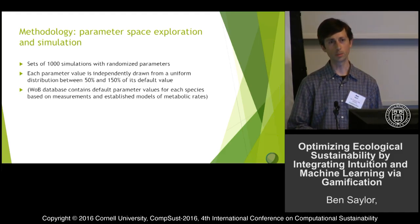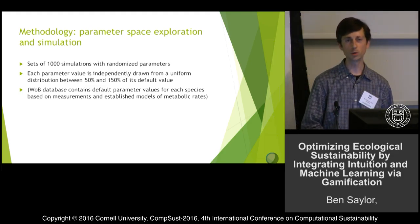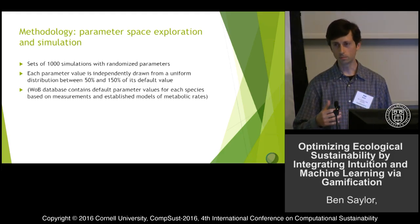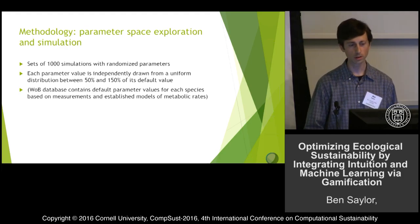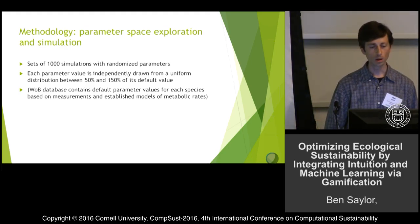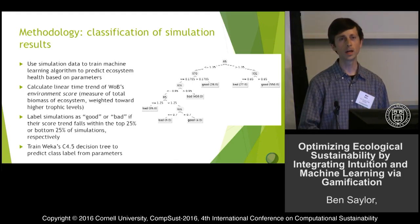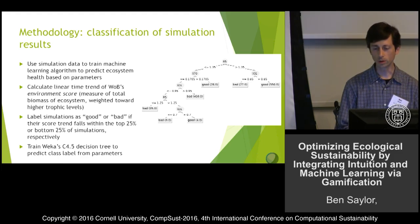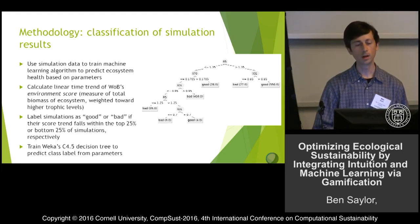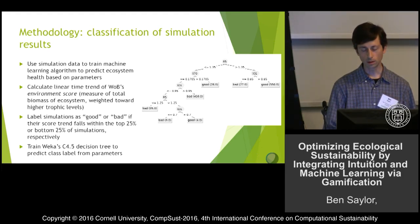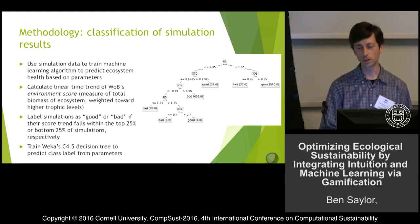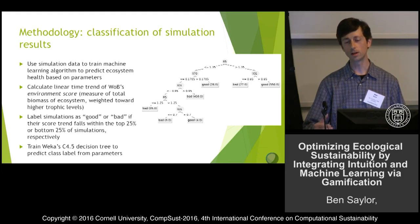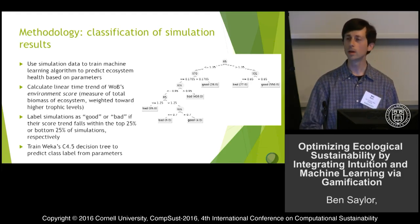Currently, we are exploring the parameter space using thousands of simulations. For each set of a thousand or so simulations, we generate random variations on the default parameter values that have been either measured or derived from established models of metabolic rates. We draw random values in a uniform distribution around these default values and run a bunch of simulations. For each food web, we have training data that we then use as a training set for machine learning. We're using a decision tree classifier — the input attributes are model parameters such as metabolic rates, growth rates, and so on for each species.